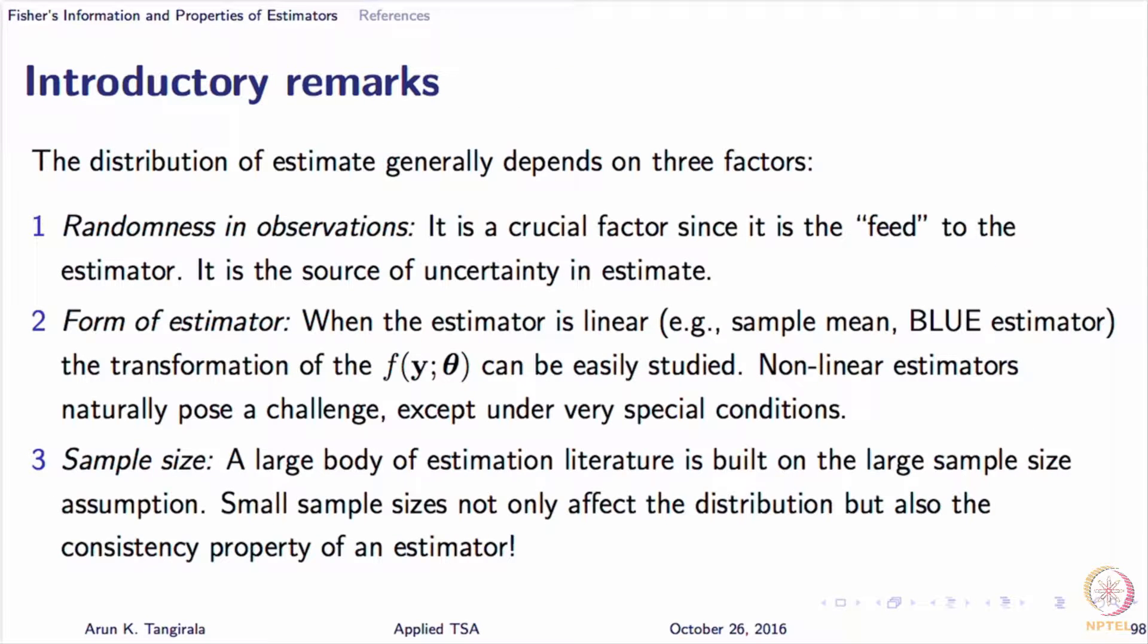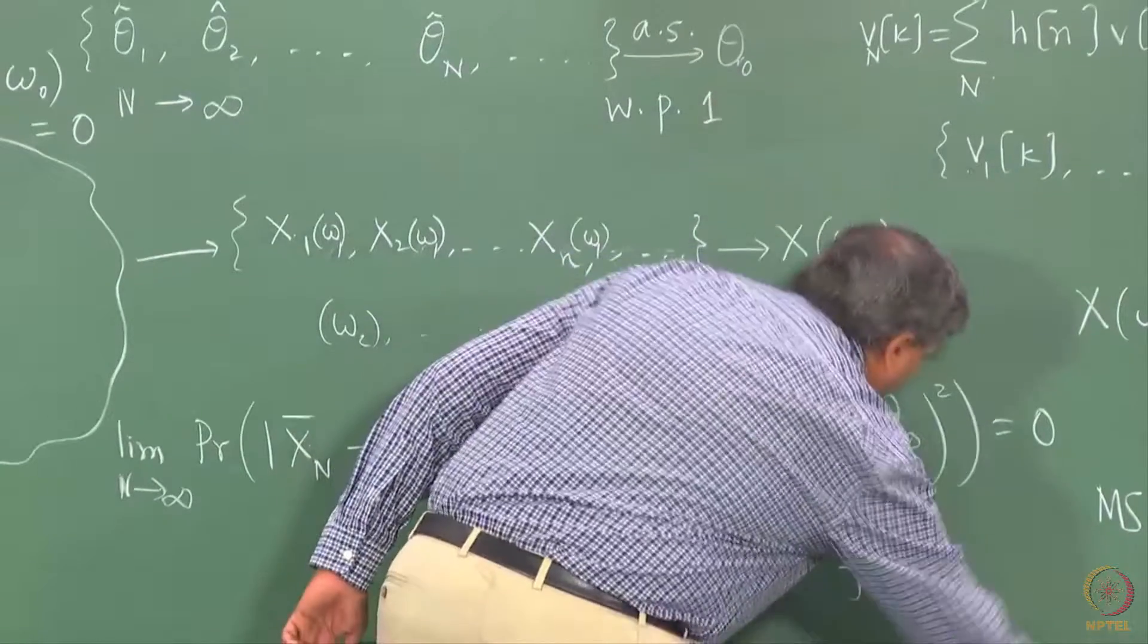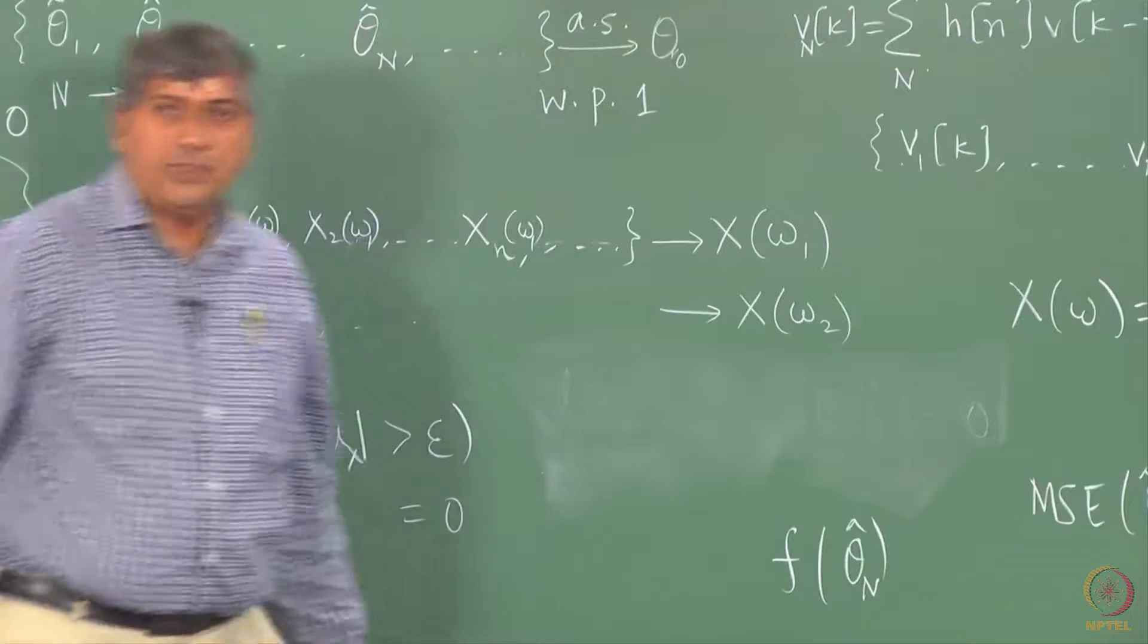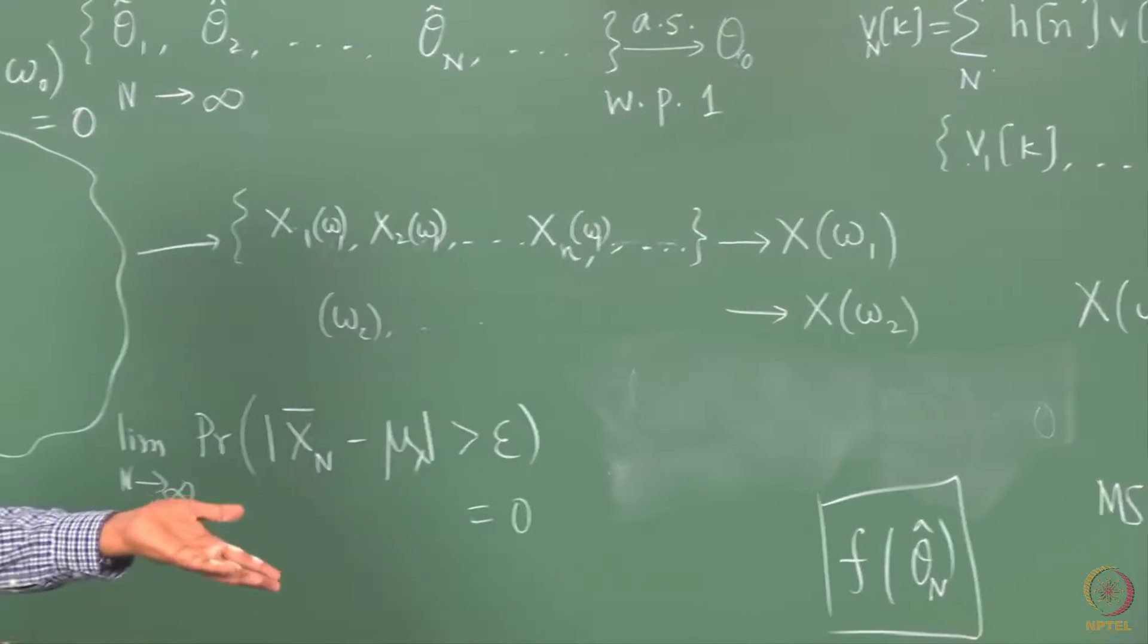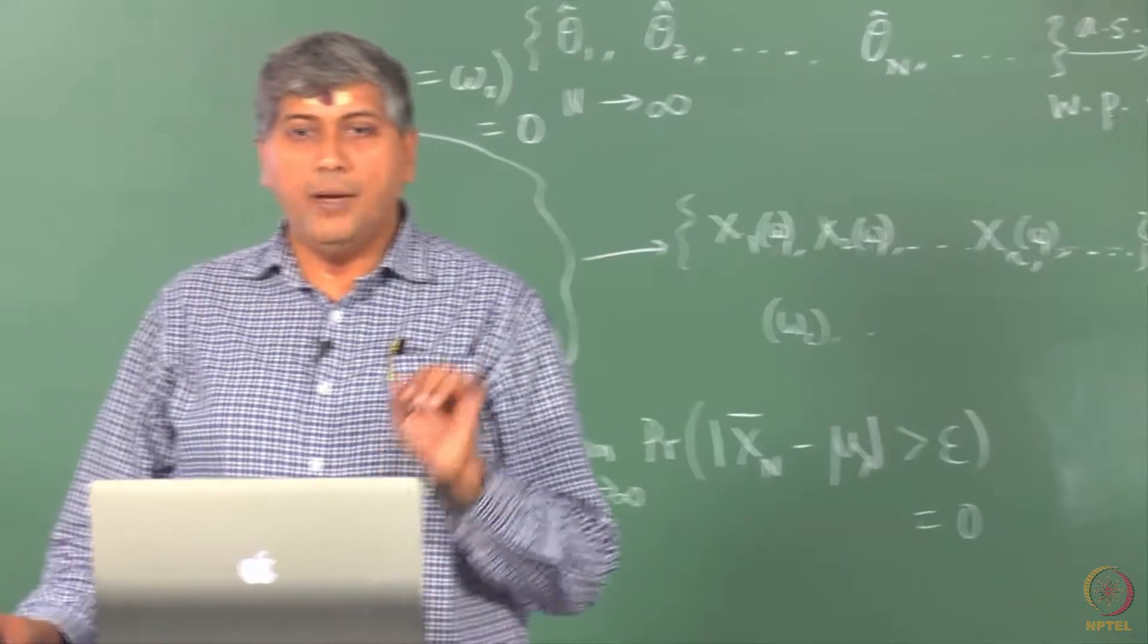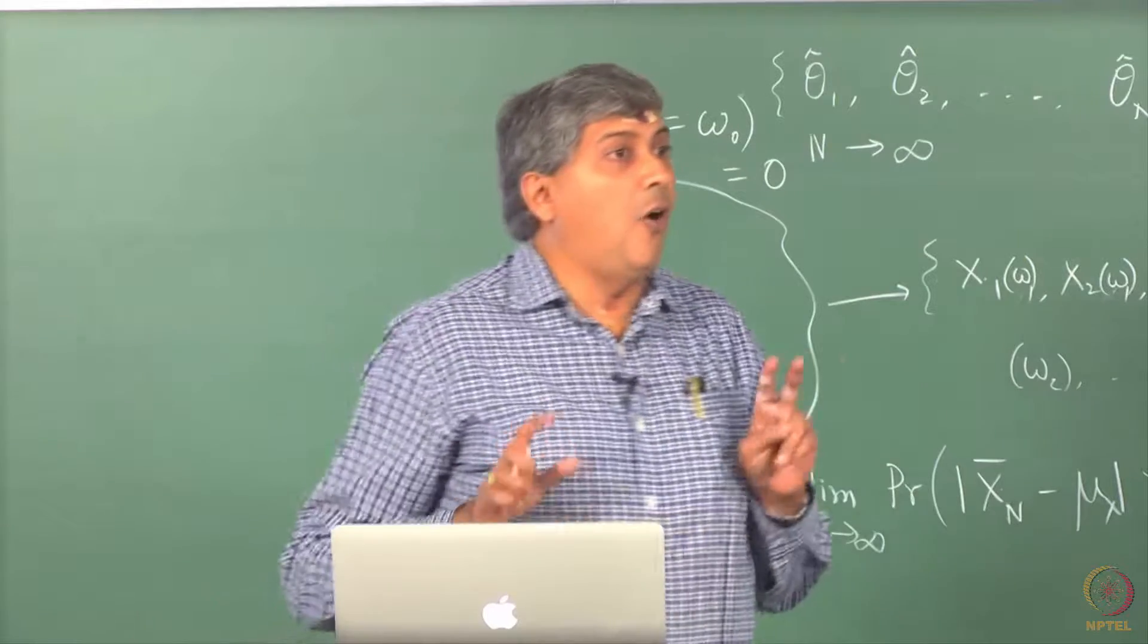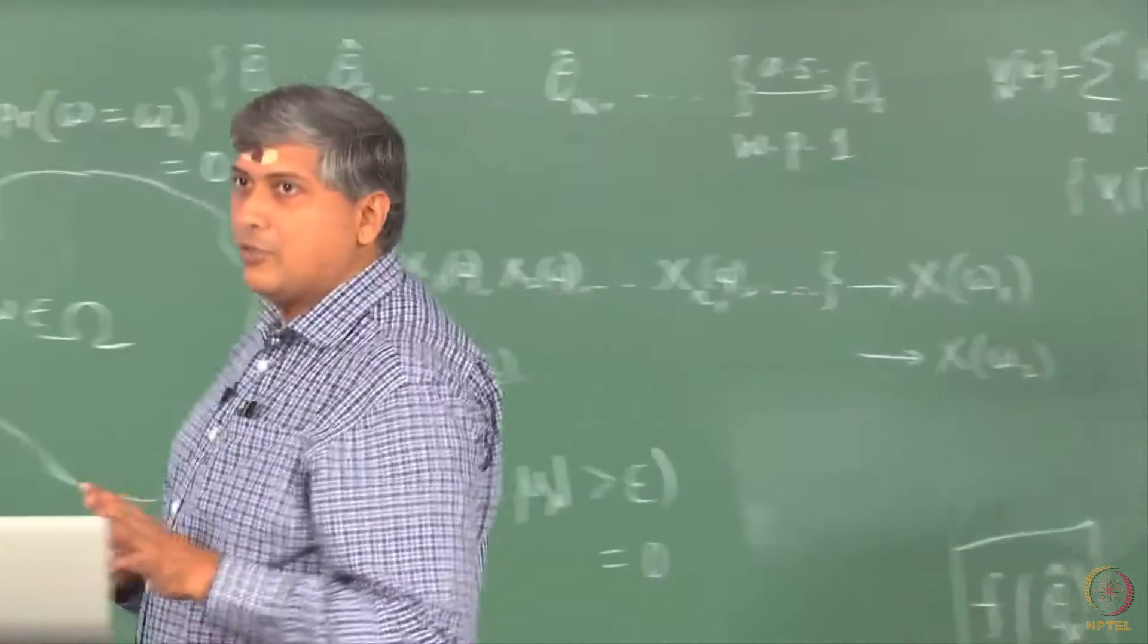So, the goal is now to construct interval estimates. And as I said earlier, the key for constructing interval estimates is a distribution. If it is a vector of parameters, it is going to be a joint PDF. It depends on the first and foremost is randomness in observations, in your data. Secondly, the form of estimator, whether it is a linear estimator or a non-linear estimator. And thirdly, it depends on the sample size.